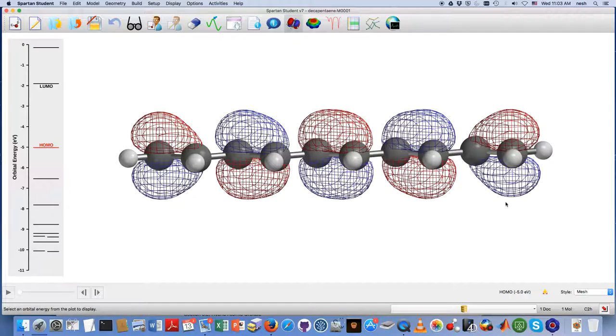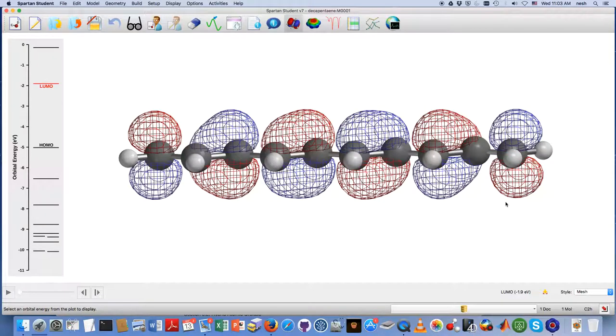Now we get up to the LUMO—no electrons in this one—but you can see if there were electrons, that would be this many: five nodes running transverse along the molecule.